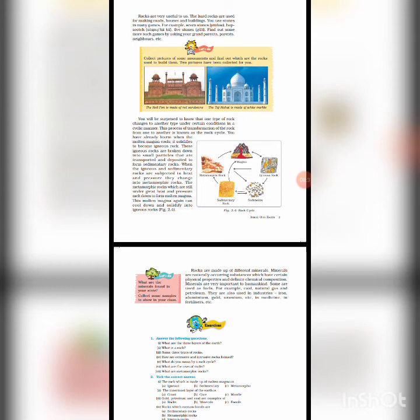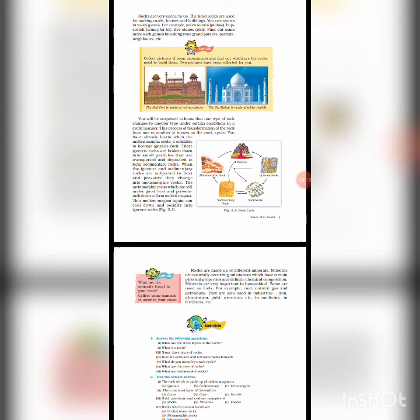These smaller grains of rocks keep moving toward basins and lower regions and gradually form sedimentary rocks. When the igneous and sedimentary rocks are subjected to heat and pressure, they change into metamorphic rocks. The metamorphic rocks, which are still under great heat and pressure, melt down to form molten magma, which again cools down and solidifies into igneous rocks. These processes take hundreds and thousands of years.